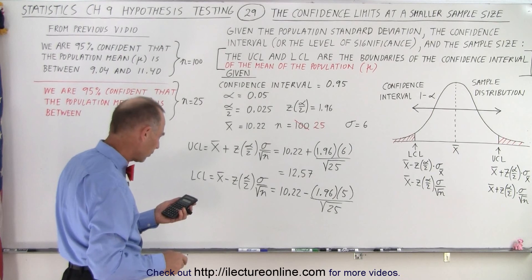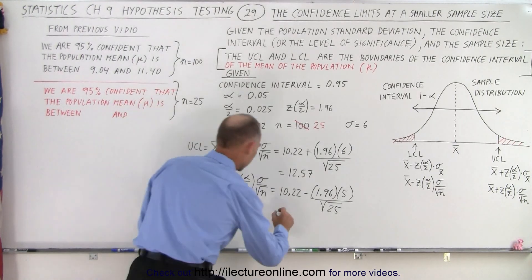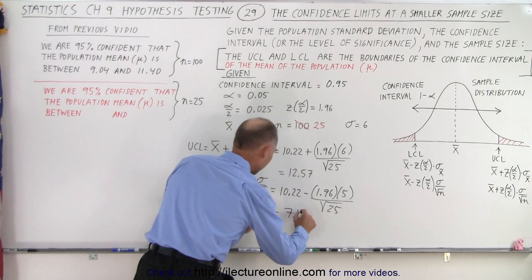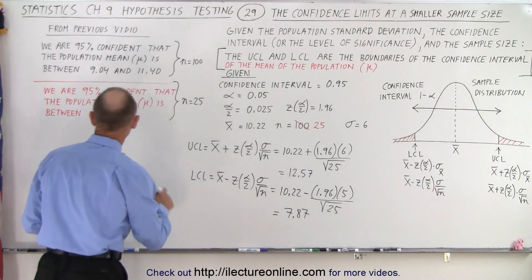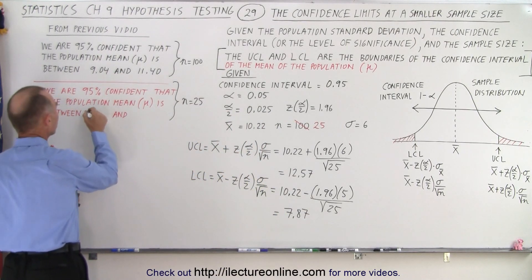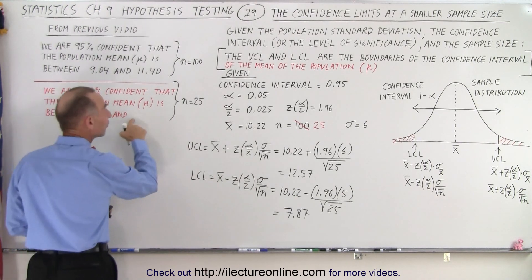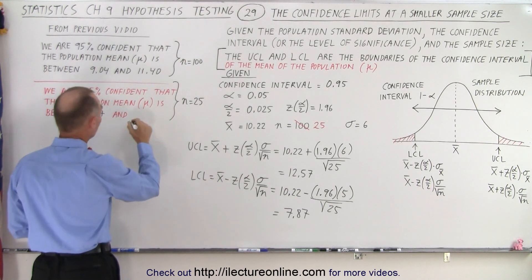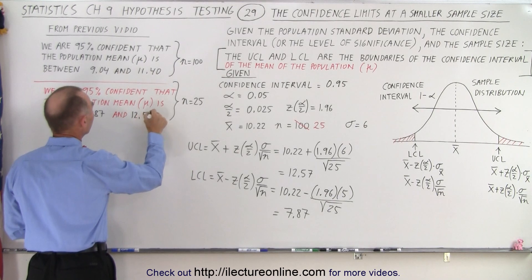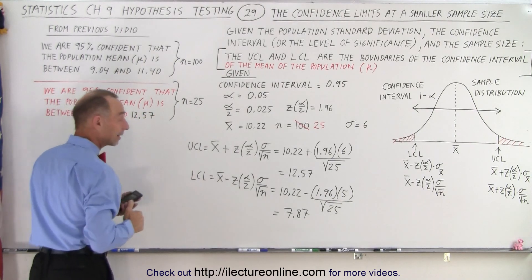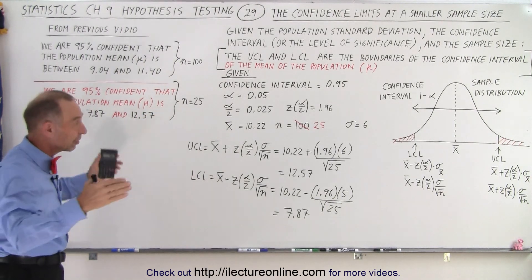So the limits are now going to be 7.87 for the lower confidence limit and 12.57 for the upper confidence limit. You can see that the limits have significantly shifted by taking a smaller sample size.